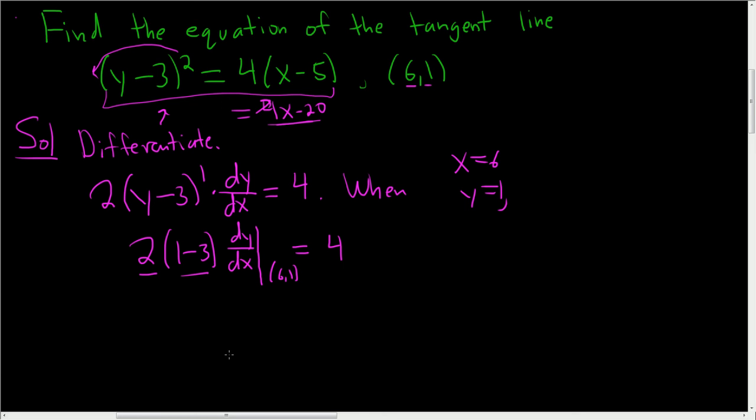All right, so here we get 2 times negative 2. So this is negative 4 dy dx at the point 6, 1. All right, let's be pros about this. Let's do it 100% correct. And to finish, you divide by negative 4.